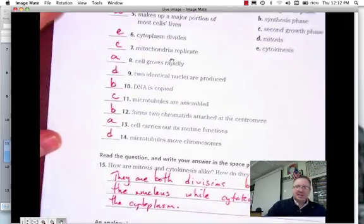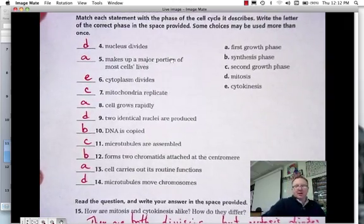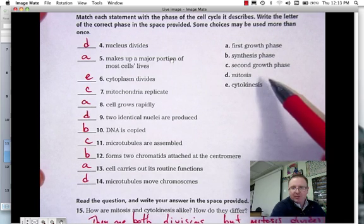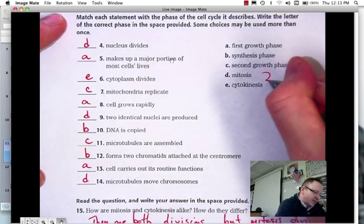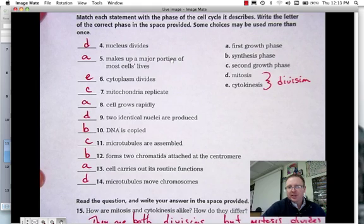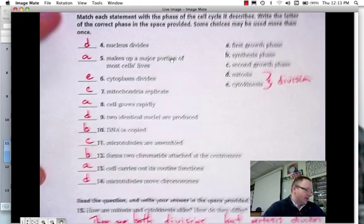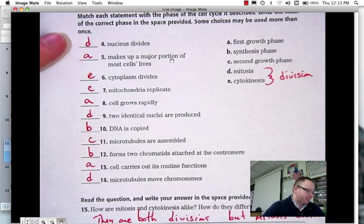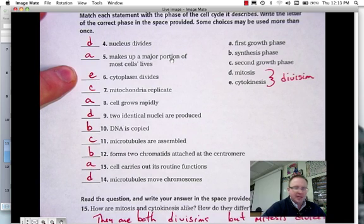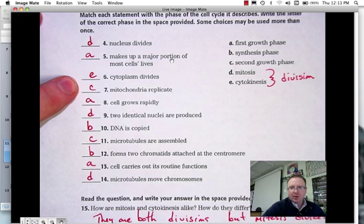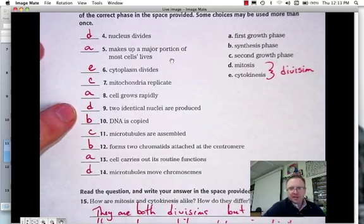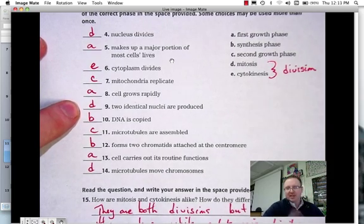Okay, flipping to the back here, this is a matching that just looks at the events that occur during these five phases. I should mention, by the way, that in the PowerPoint, mitosis and cytokinesis are kind of lumped into the same phase that just relates to division. They are distinct in that mitosis is the division of the nucleus, whereas cytokinesis is the division of the cytoplasm. So the nucleus divides during mitosis. First growth phase is the major portion of the cell's life. Cytoplasm divides during cytokinesis. The mitochondria replicate during the second growth phase. That's when the organelles are replicated in preparation for division.